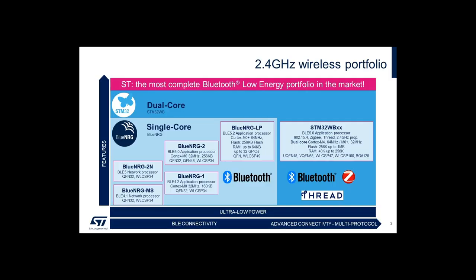In regards to our Bluetooth Low Energy product portfolio, we have two main product offerings depending on our customer needs in regards to features and processing capabilities. Our STM32 product family is based on a dual-core SoC with a Cortex-M4 running the application and a Cortex-M0 Plus running the BLE stack, with up to one meg of flash and 256k of RAM. On the other hand, we have our Blue Energy product family, where we have both a network coprocessor and an SoC product offering.